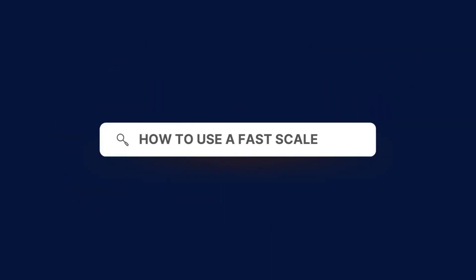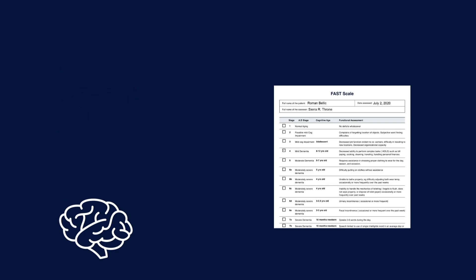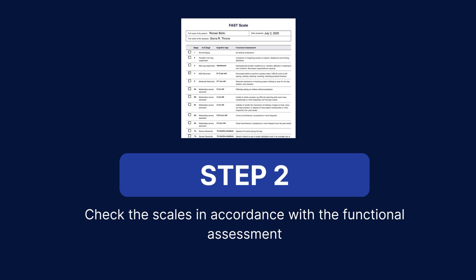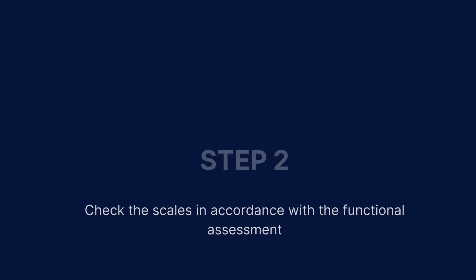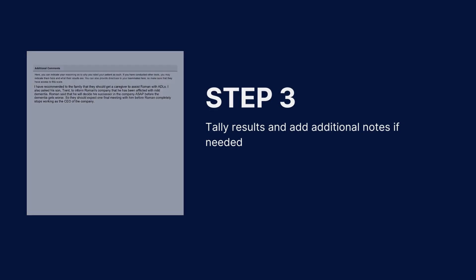How to use the FAST Scale: the first step is to fill in the patient information. The second step is to check the scales in accordance with the functional assessment. You will then need to tally your results and add additional notes if needed for an effective treatment plan.